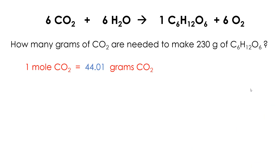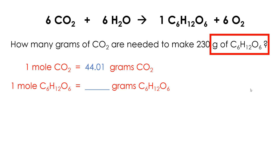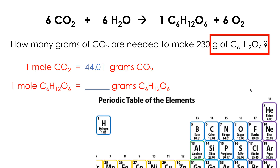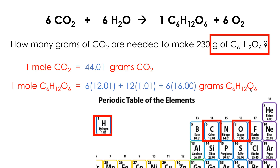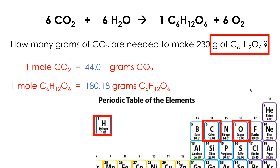Next, I need to know about grams of sugar — that's glucose. So I pull up my periodic table and figure out the molar mass the same way. I have six carbons, 12 hydrogens, and six oxygens. I add up all those masses and I get 180.18 grams.